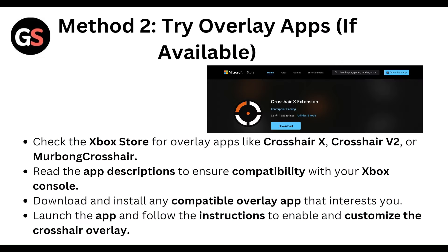Next, try an overlay app if available. Check the Xbox store for overlay apps like Crosshair X, Crosshair V2, or Marabong Crosshair. Read the app description to ensure compatibility with your Xbox console, download and install any compatible overlay app, launch it, and follow the instructions to enable and customize the crosshair overlay.